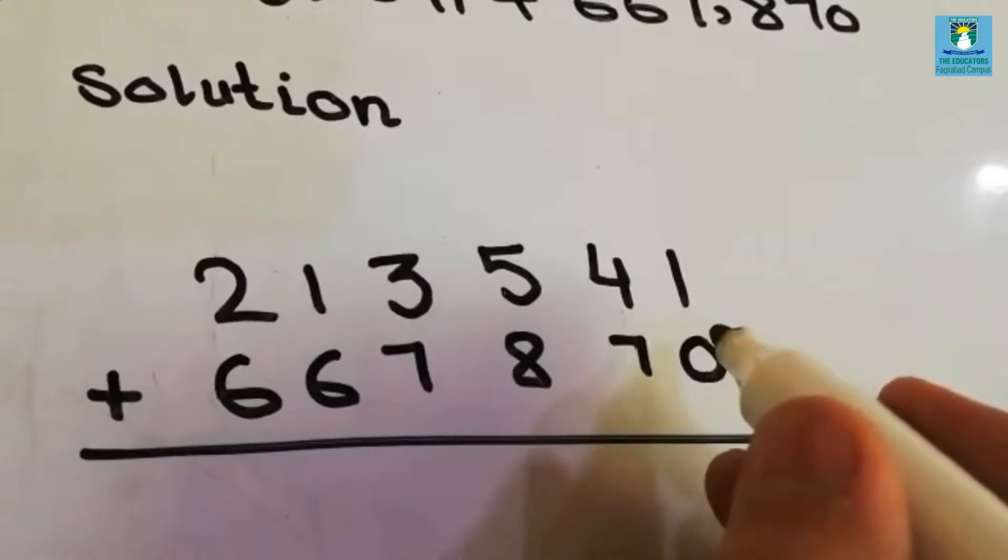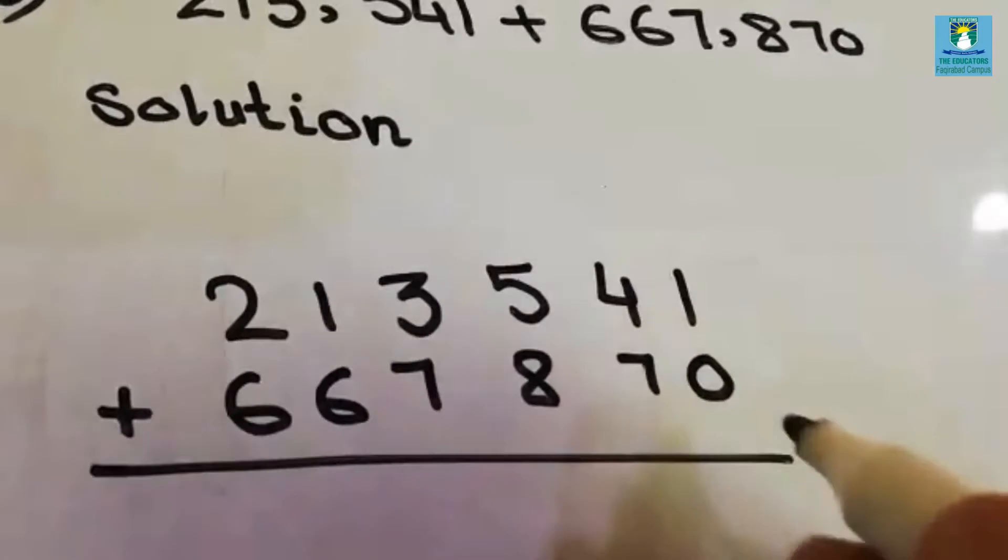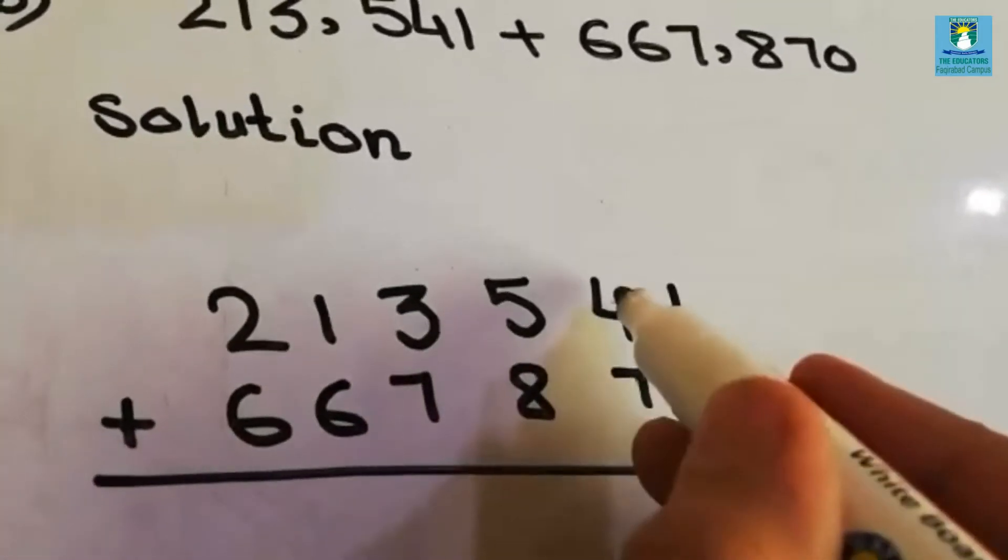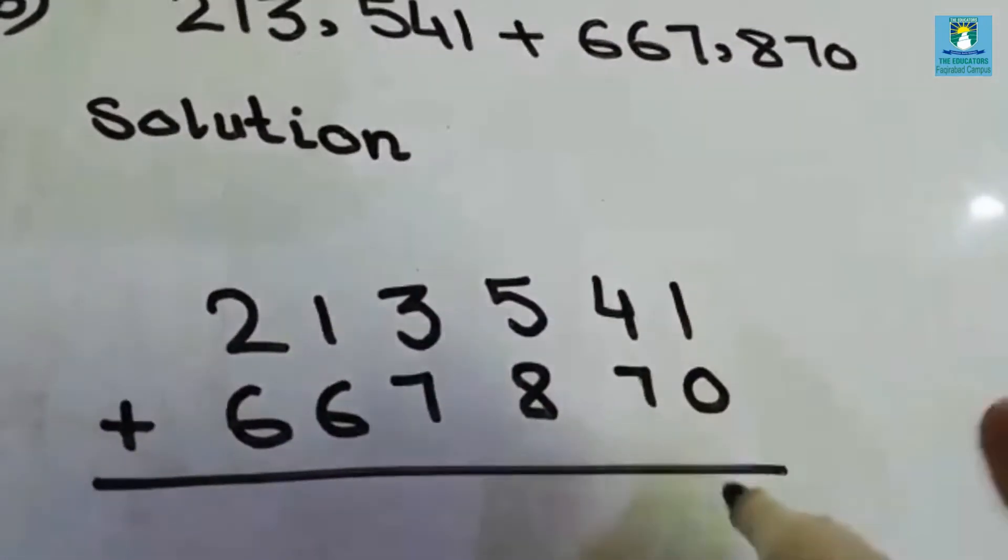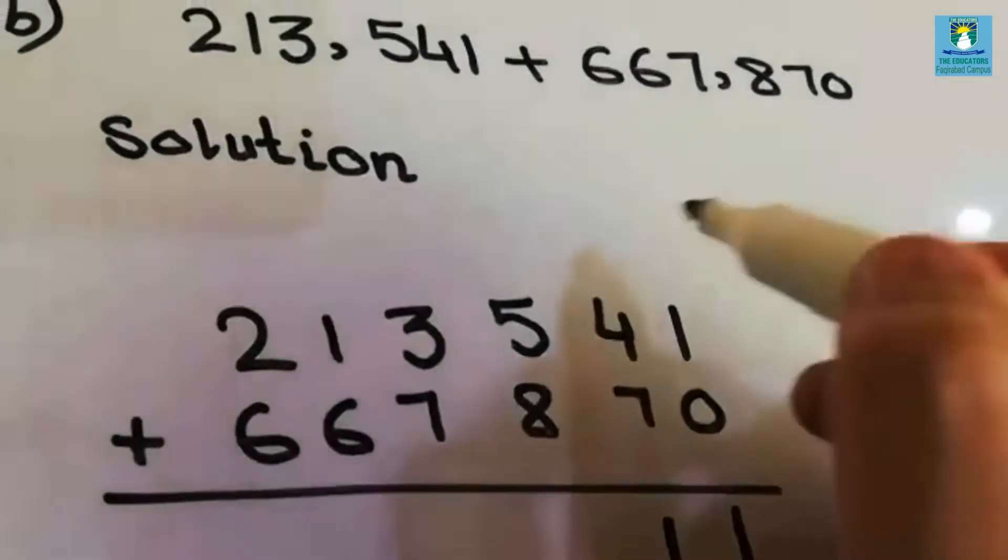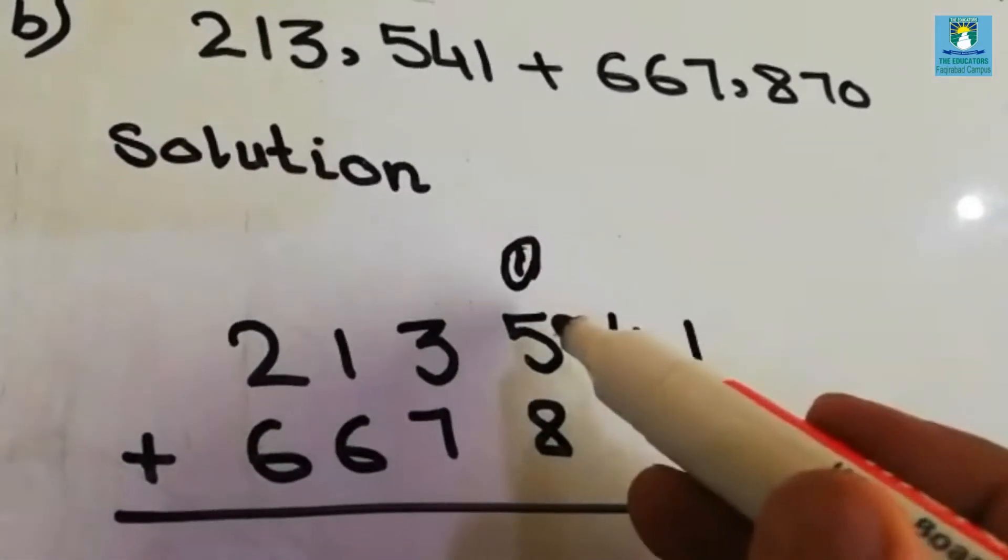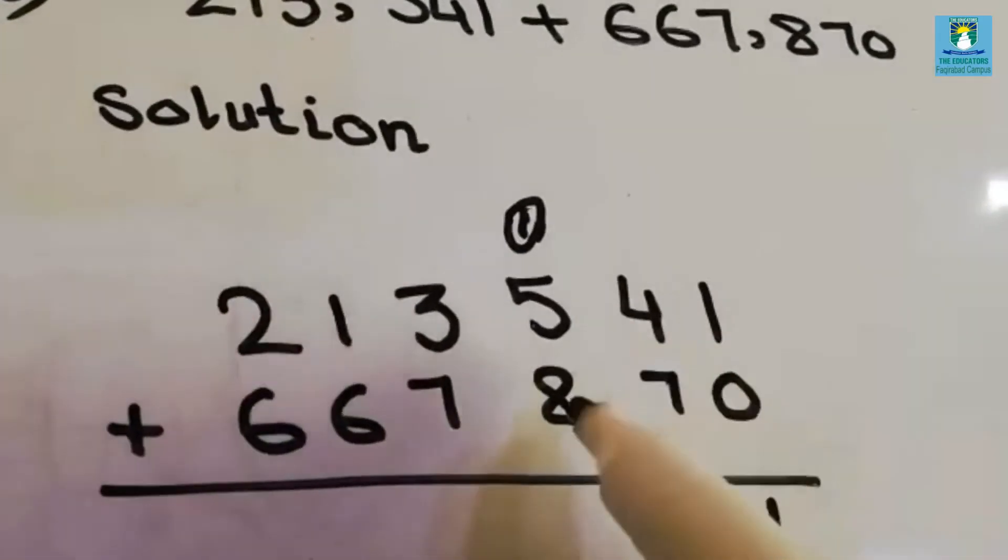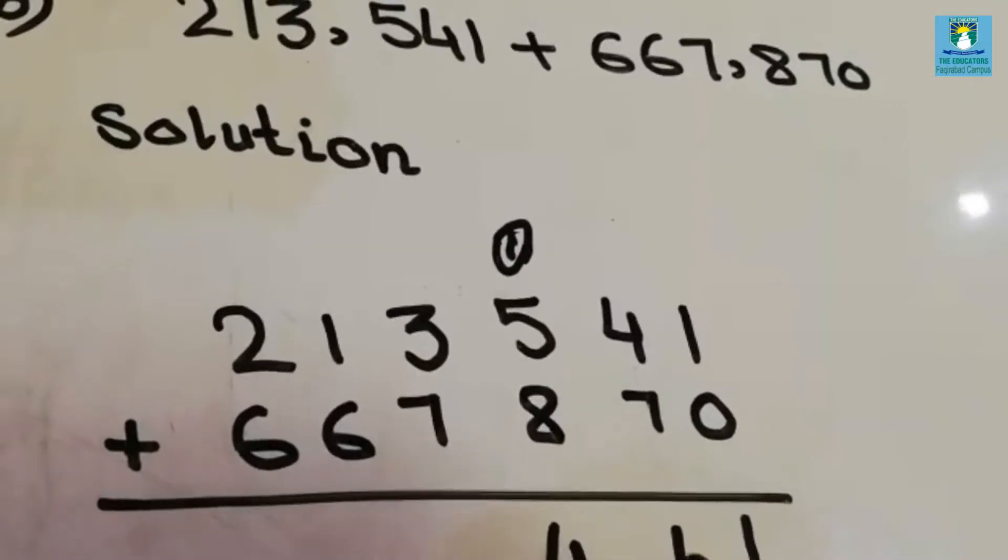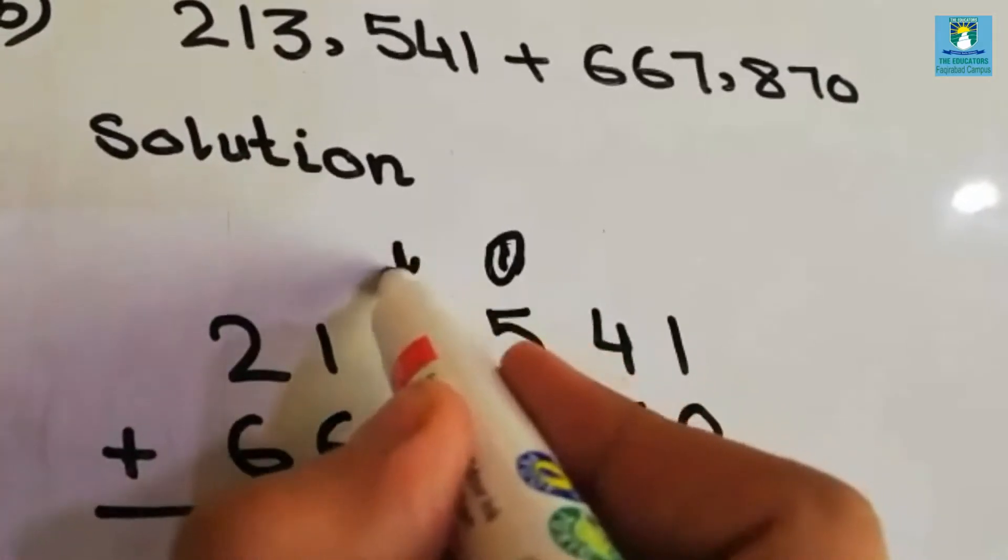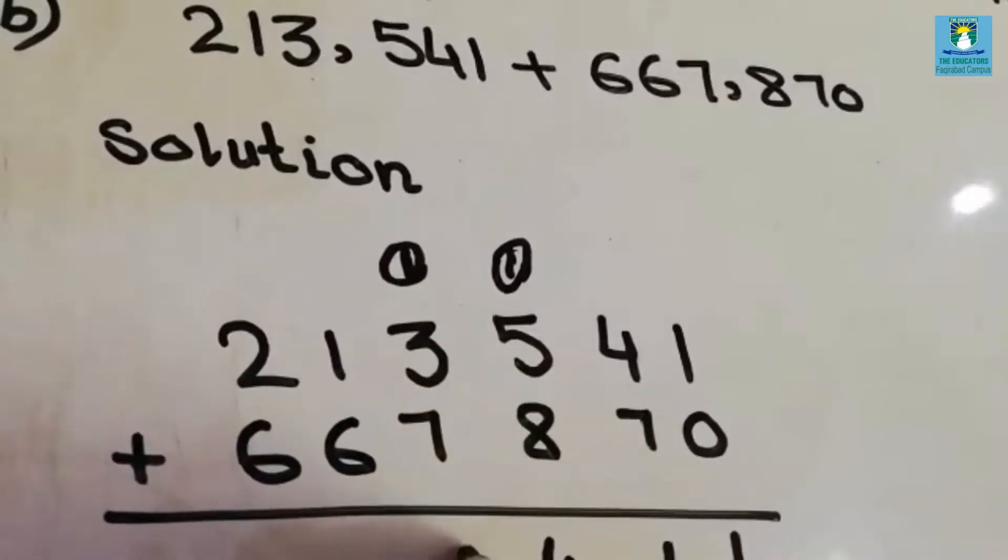Now we have to find out the sum, so we will start from units. 1 plus 0 is 1. 7 plus 4 is 11, so write here 1, 1 will be carry. 8 plus 5 is 13, 13 plus 1 is 14. 1 carry. 7 plus 3 is 10, 10 plus 1 is 11. 1 carry.